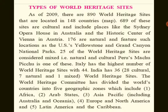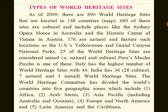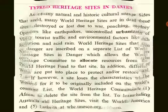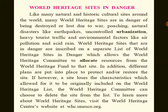Italy has the highest number of World Heritage sites with 44. India has 36 — 28 cultural, 7 natural, and one mixed. The World Heritage Committee has divided the world's countries into five geographic zones: Africa, Arab states, Asia Pacific including Australia and Oceania, Europe and North America, and Latin America and the Caribbean.